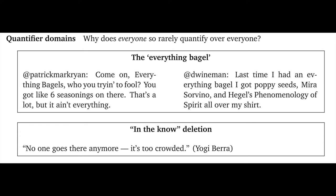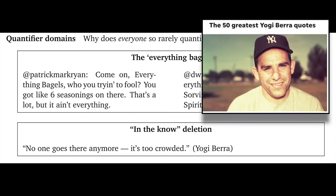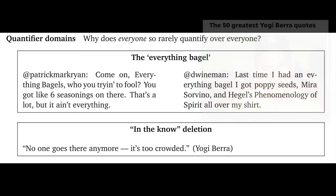In this Everything Bagel panel, people are playing around with this. Twitter user Patrick Mark Ryan says, 'Come on, Everything Bagels, who are you trying to fool? You've got like six seasonings on there. That's a lot, but it ain't everything.' And Dee Weinman chimed in: 'Last time I had an Everything Bagel, I got poppy seeds, Mira Sorvino, and Hegel's Phenomenology of Spirit all over my shirt.' Talk about going wide with a domain for 'everything.' This Yogi Berra line is a classic that we could describe as in-the-know deletion — 'No one goes there anymore, it's too crowded,' meaning no one cool or no one in the know.